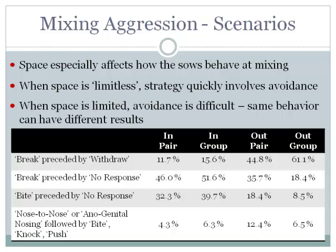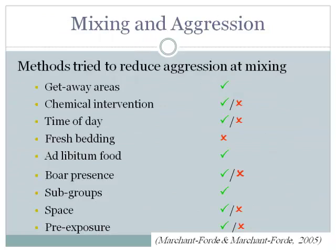Nose-to-nose contact and anogenital nosing are all significantly lower than expected by random chance before biting, knocking, and pushing. So these overt investigatory behaviors — getting olfactory information off each other — are really good and work to depress aggression.